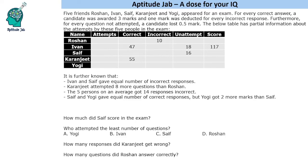Hello everyone, welcome to Aptitude Jab. This is a data table with missing values. It says that there are 5 students who appeared for an examination. For every correct answer, a person was awarded 3 marks.